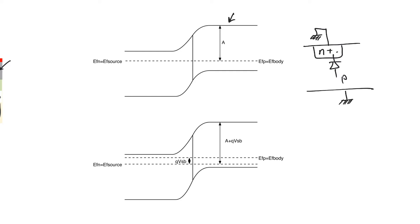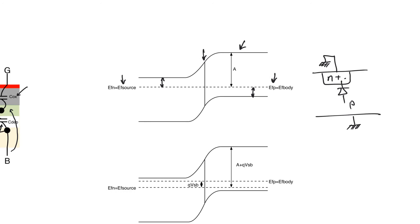This is the top diagram here. Here we have the Fermi level at the source and the Fermi level at the body, and they are the same Fermi level because we are at thermal equilibrium. This point is the interface between the source and the body. This distance indicates the doping level in the source and this distance indicates the doping level in the body. Now, if we look at the top band diagram and try to obtain an expression for the surface potential at the threshold voltage, it is equal to 2φB — two times the bulk potential. The bulk potential equals (EI minus E-Fermi in the substrate) divided by Q. In the top diagram, E-Fermi in the body equals E-Fermi in the source because we are at equilibrium, so Vs equals 2φB.